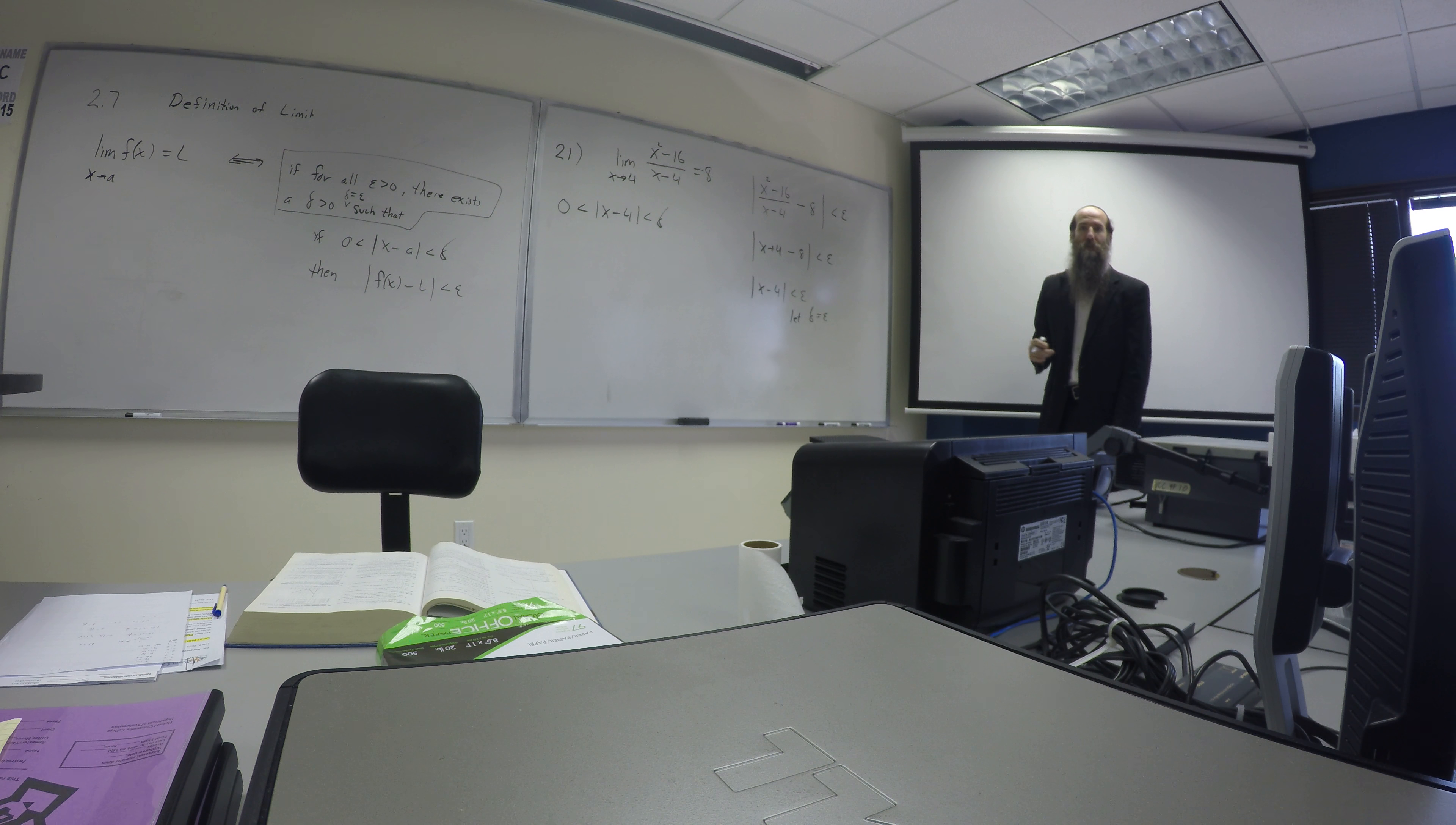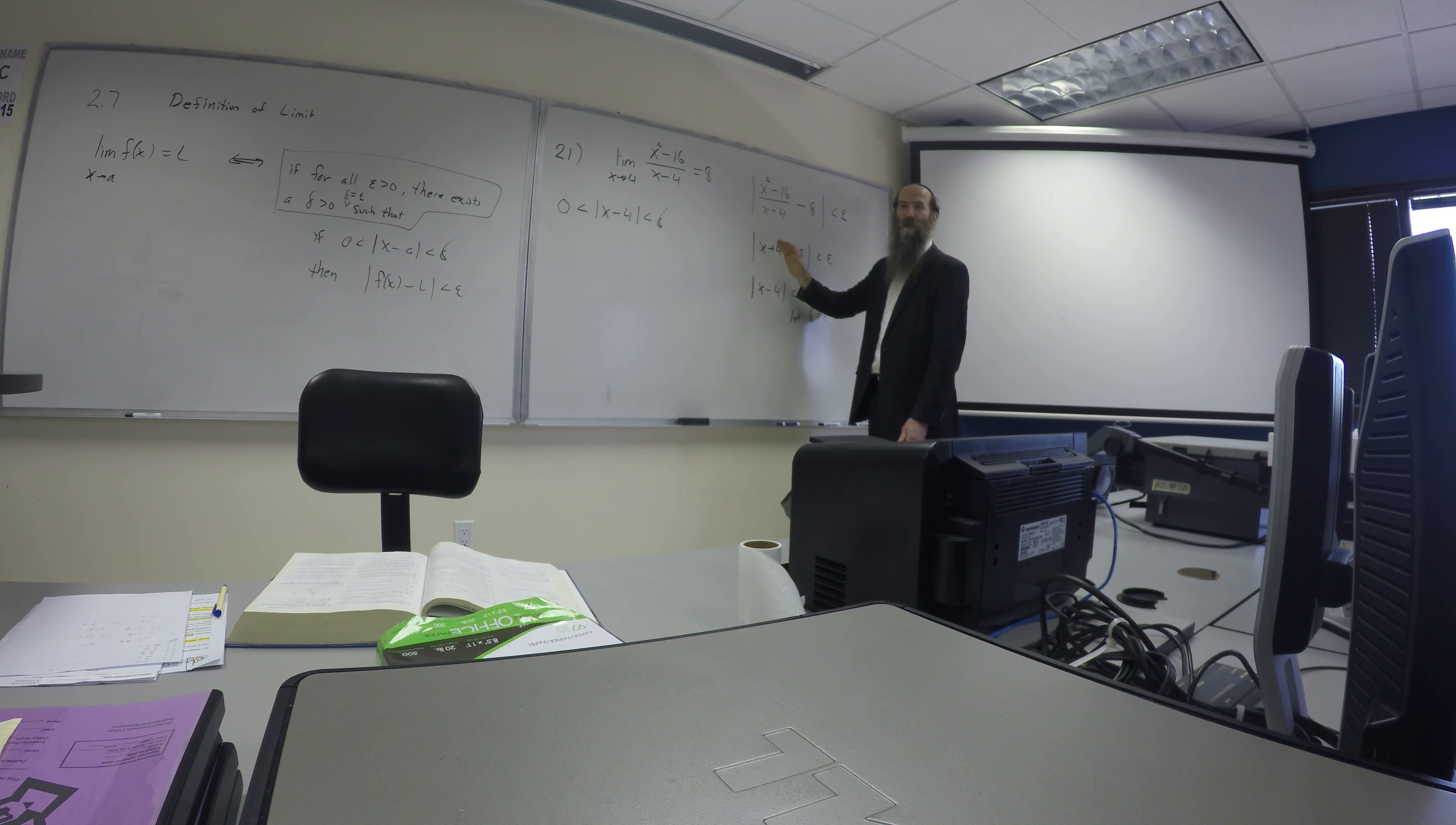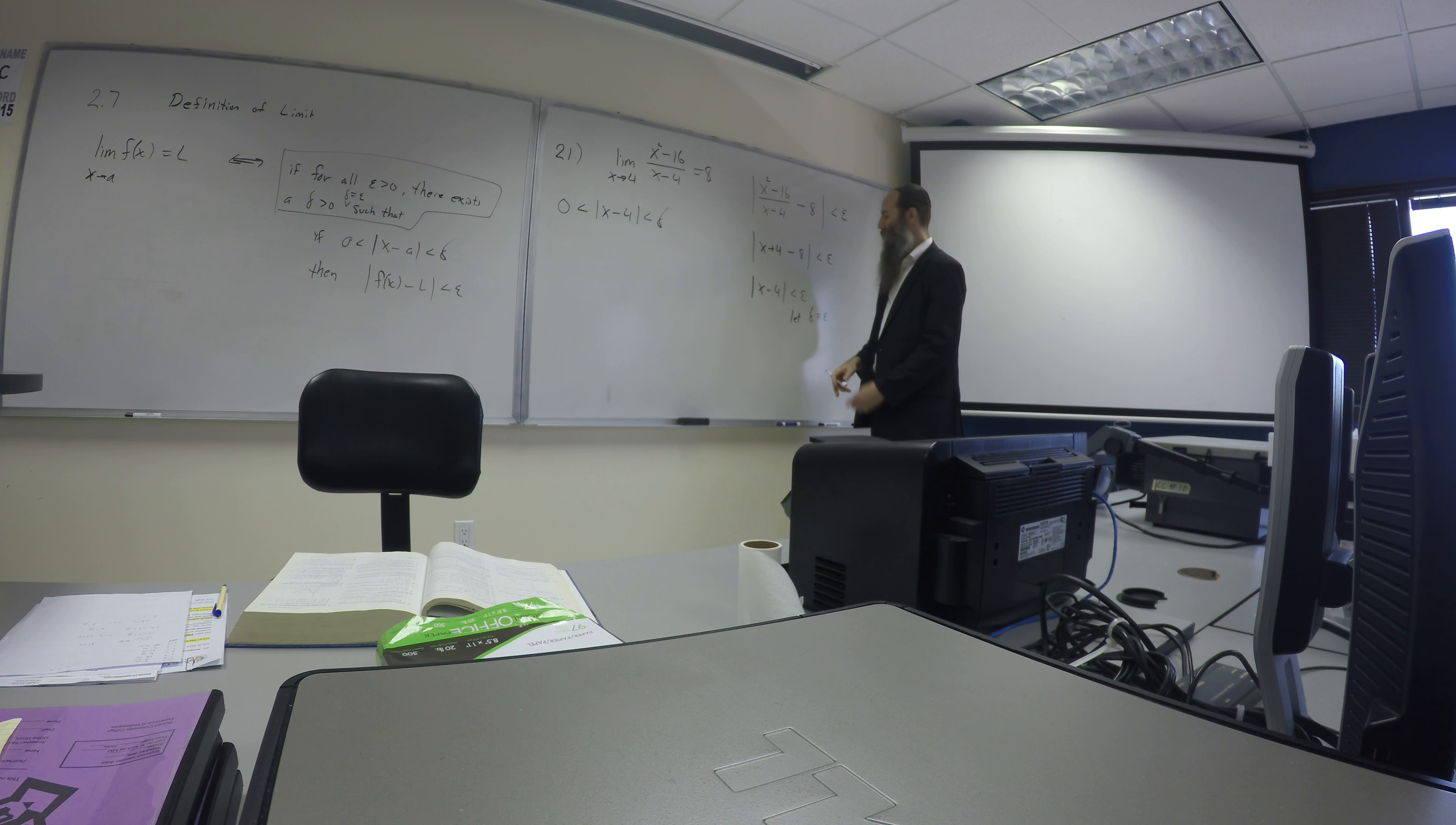Because it's really a line with a hole. So being that it's a line, the slope is 1 in this case. It's really like x plus 4 all the time, right? So, slope 1. So delta should be epsilon.